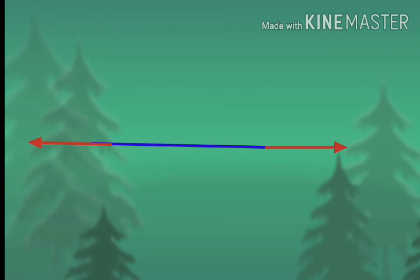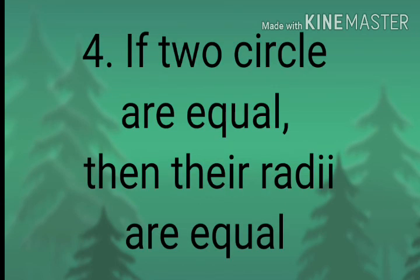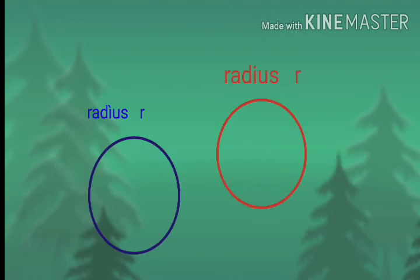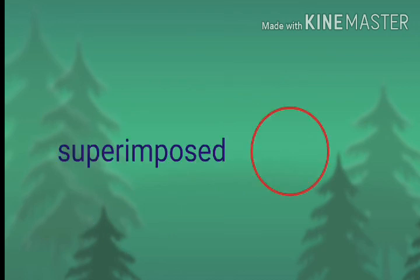The fourth sub-question: if two circles are equal, then their radii are equal. That is also true. If two circles are equal, then the region bounded by one circle can be superimposed on the other. This means their centers and circumferences lie over one another, and hence their radii are equal. So the given statement is true.